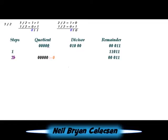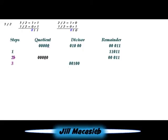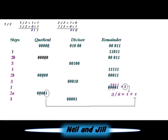Shift the quotient register to the left, setting the bit to 0. If the last value of the remainder is less than 0, just shift the quotient register to the left, setting the bit to 1. The third step is to shift the divisor register right 1 bit. Continue the process until you reach the positive value of the divisor. Therefore, the answer is 1, remainder 1.